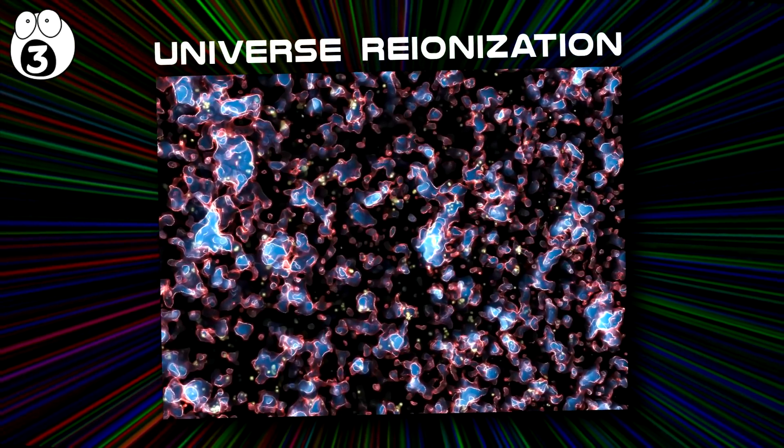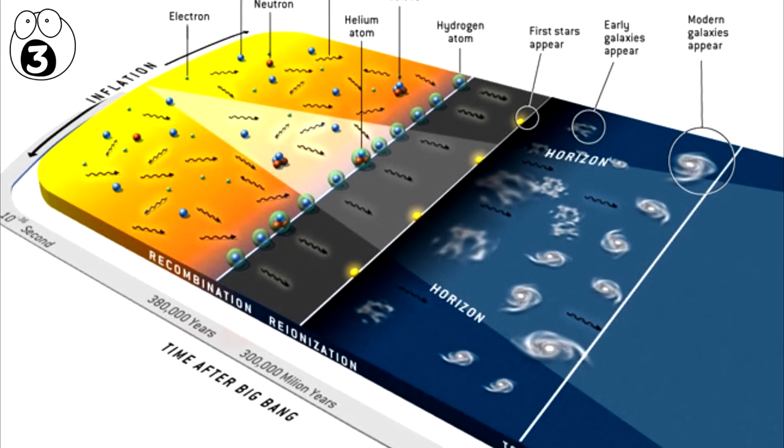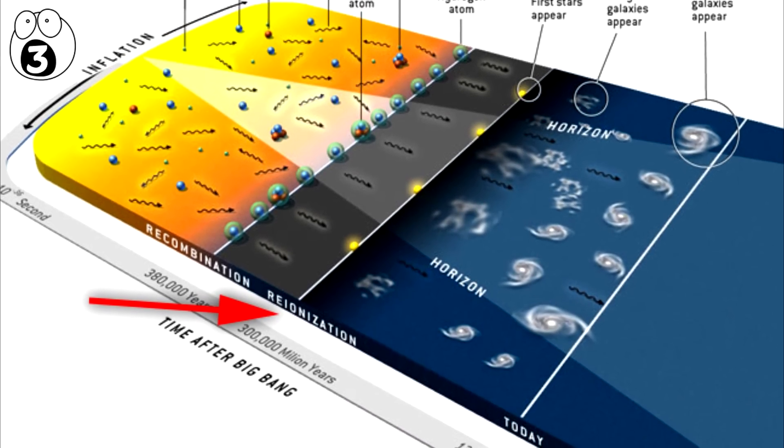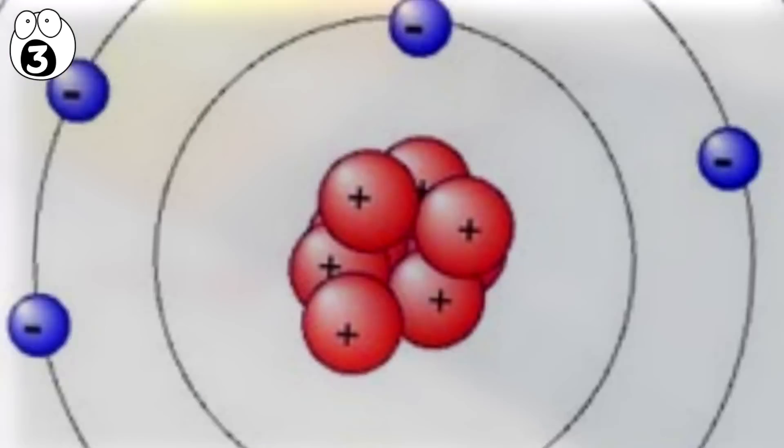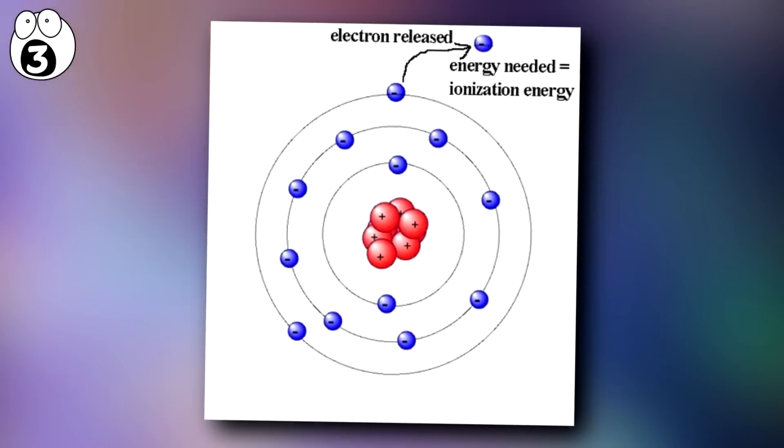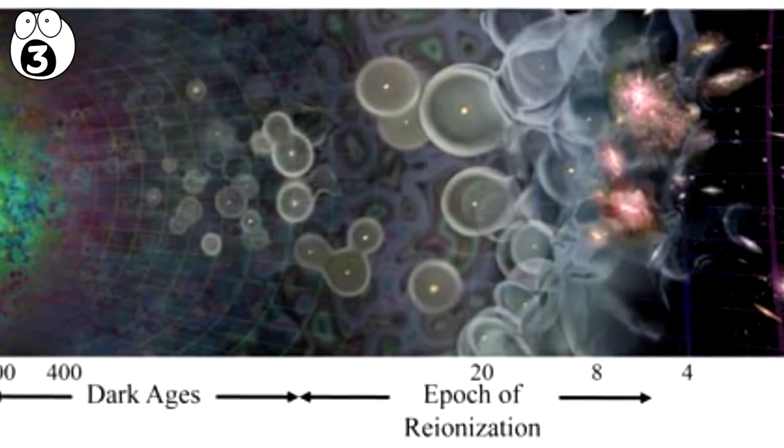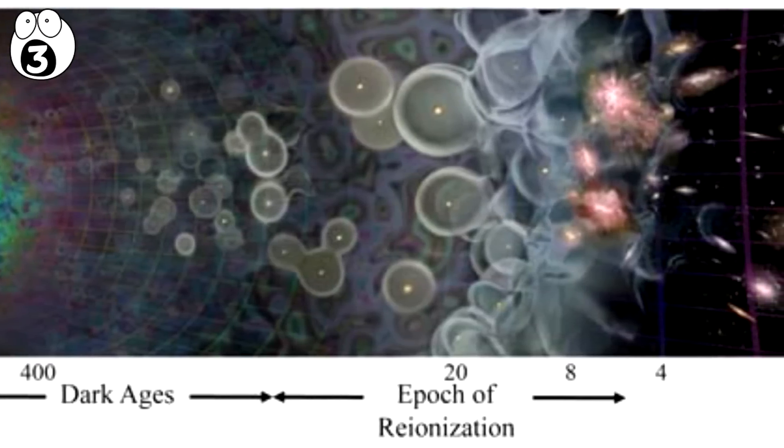Universe Reionization. The reionization of the universe refers to the time period when all of the gas in the universe became ionized, meaning that their molecular structure changed with the removal of one or more electrons. It was one of the most important changes in the universe, since during this period, the first radiating objects appeared. This period is actually responsible for the universe as we see it today, since before this epoch, the universe was in the so-called Dark Ages.